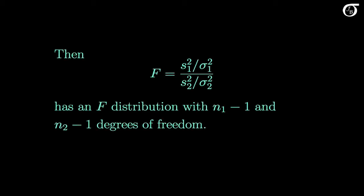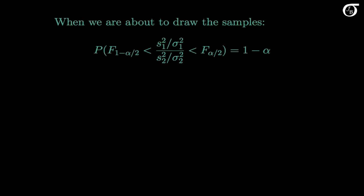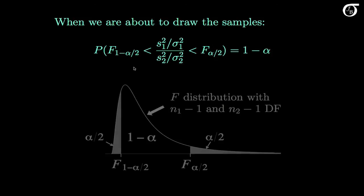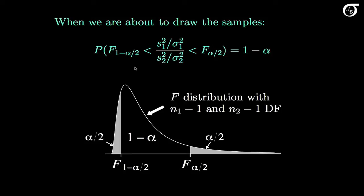Under these conditions, this quantity — s1 squared over sigma 1 squared, divided by s2 squared over sigma 2 squared — has an F distribution with n1-1 and n2-1 degrees of freedom. We're going to use that property to construct the appropriate confidence interval. When we are about to draw the samples, this quantity in the middle is a random variable because s1 squared and s2 squared are random variables, while sigma 1 squared and sigma 2 squared are fixed values. F sub alpha over 2 and F sub 1 minus alpha over 2 are the appropriate quantiles from the F distribution with n1-1 and n2-1 degrees of freedom.